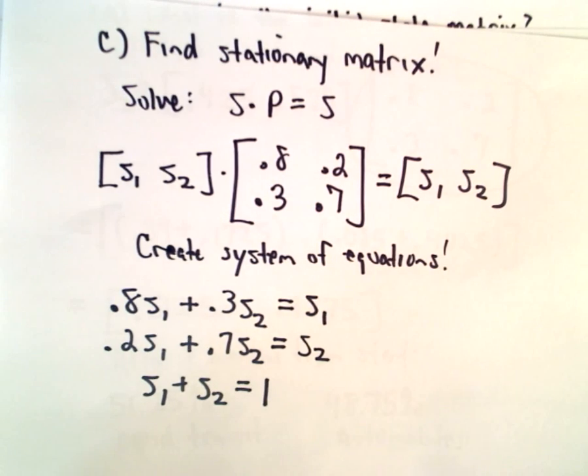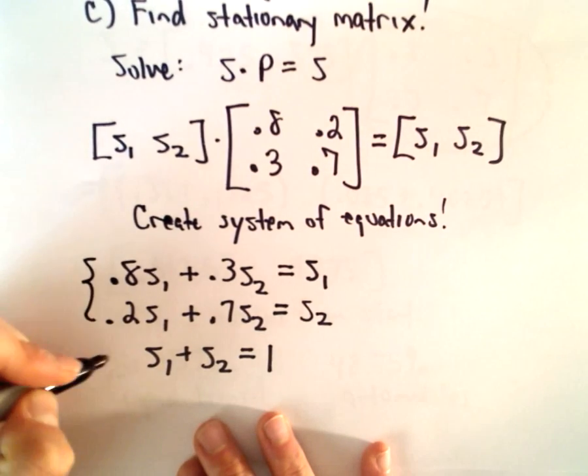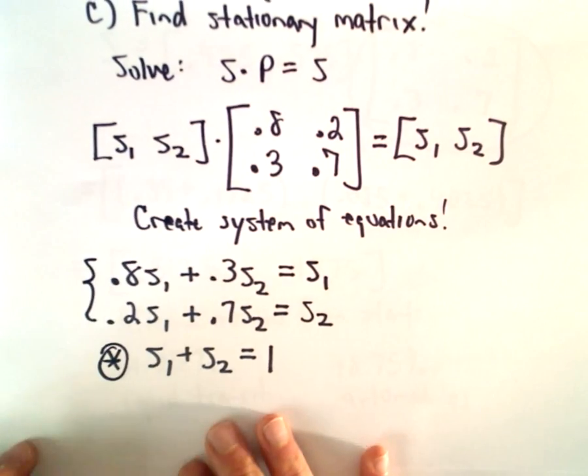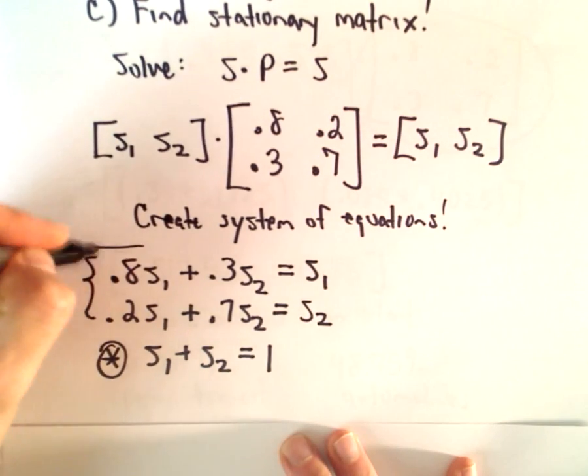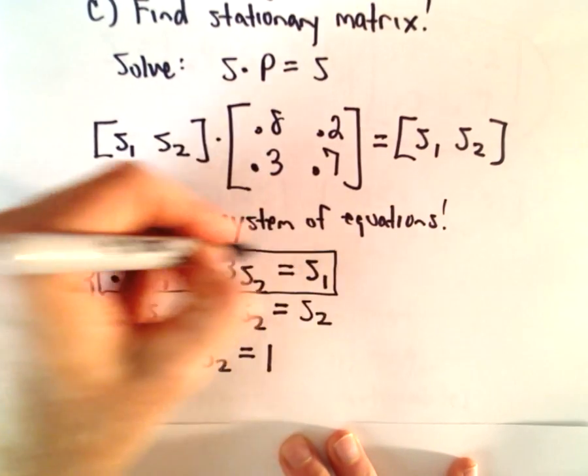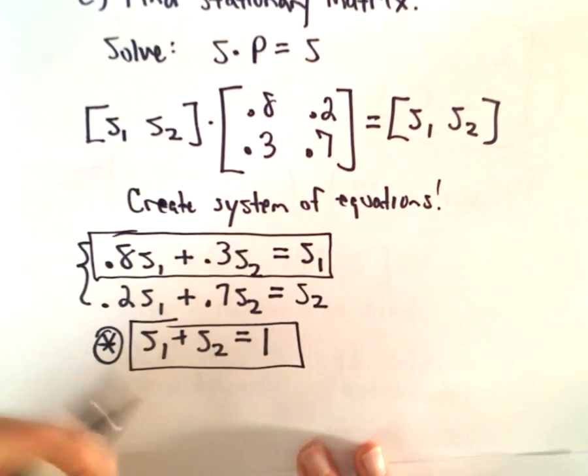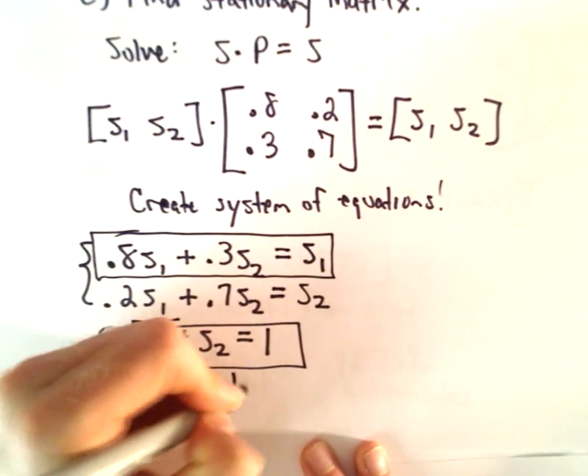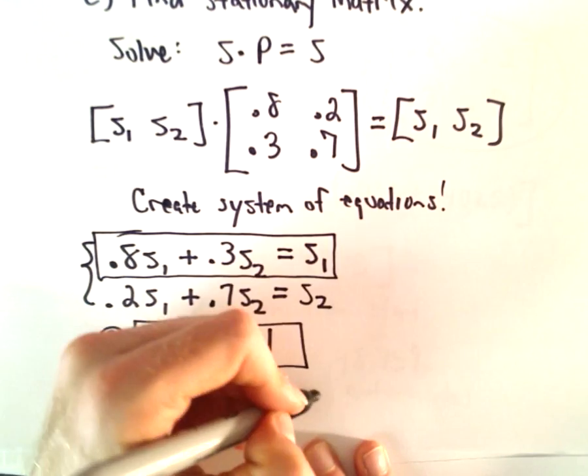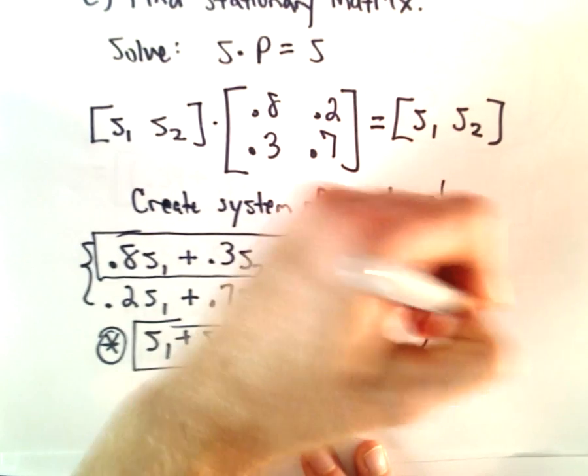At this point, I'm going to pick either the first or second equation and use the third equation, and solve this using substitution. I'm going to use the first equation. If I solve using substitution, I'm going to solve for S1, so if we subtract we have 1 minus S2. Now I'm just going to substitute that back into my first equation.